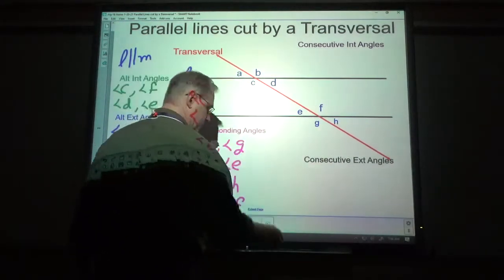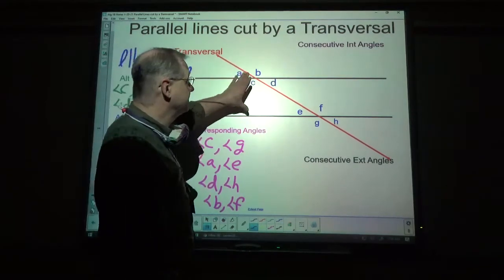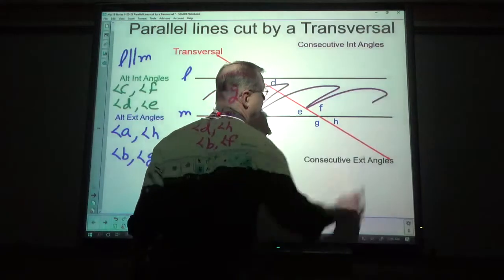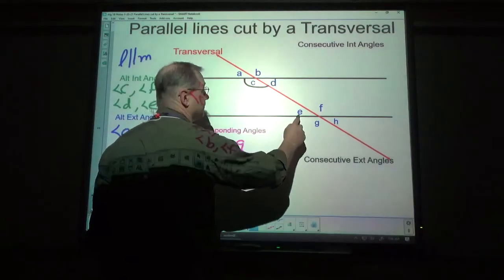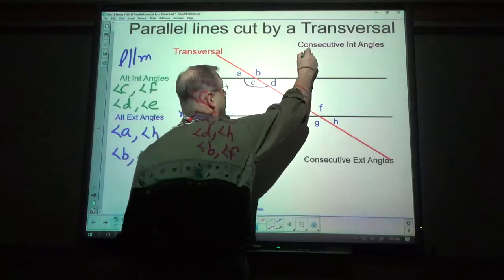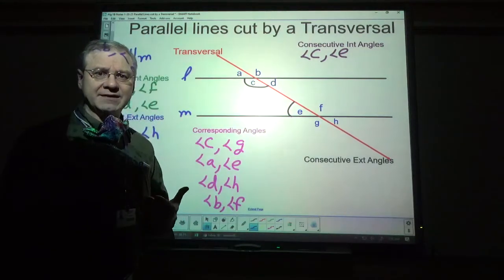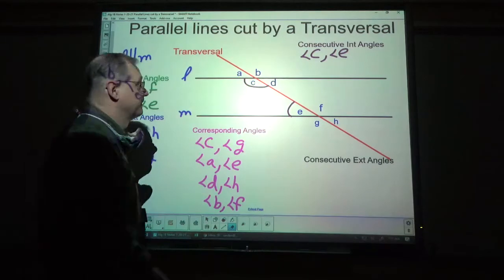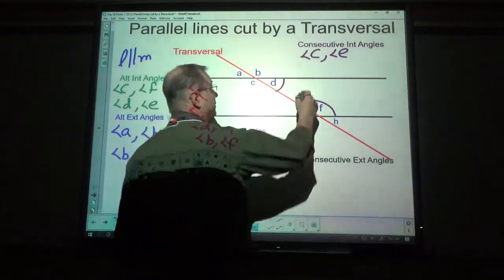Let's take a look at consecutive interior. We know it's between the two lines — that's your interior. Consecutive means on the same side of the transversal and between the two lines. I'm not putting these in to imply that they are equal in size; I'm just trying to show you where the angle is — please do not think those are the same size. C and E are consecutive interior, and D and F are consecutive interior.